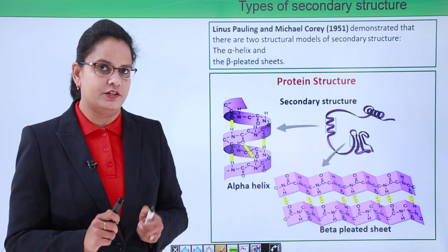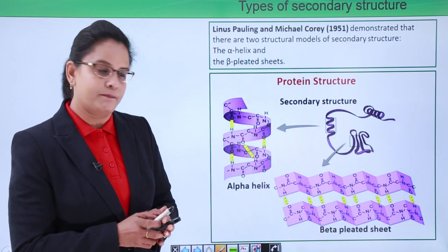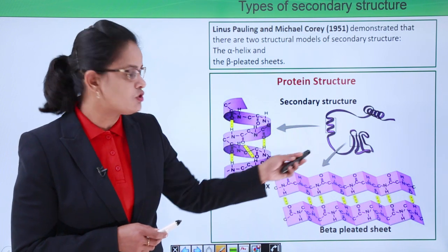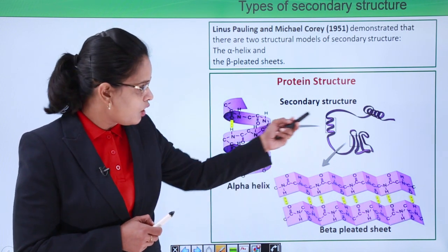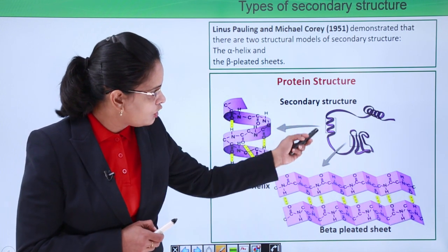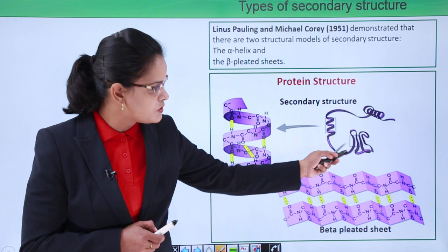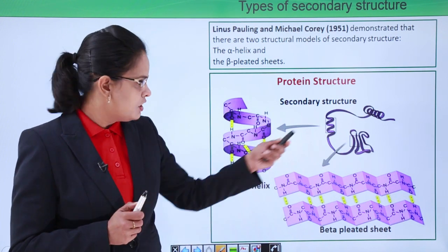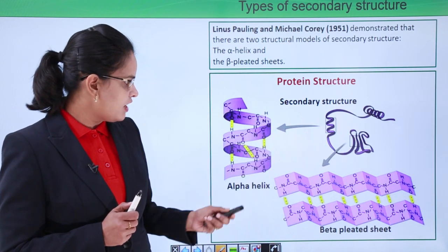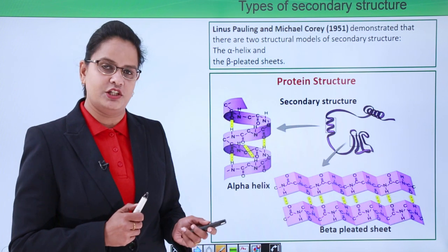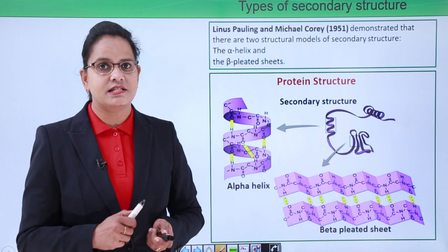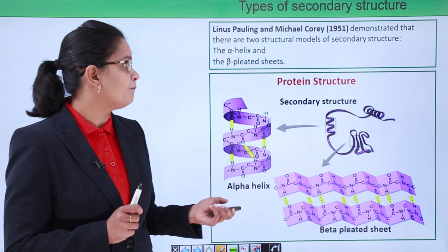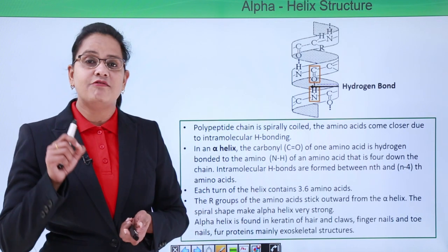As you can see in the diagram, this is the primary structure — a linear structure. It has undergone different types of folding to form the secondary structure. This is the alpha helix and this is the beta pleated sheet. Let us discuss them individually. First, the alpha helix.